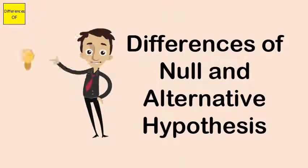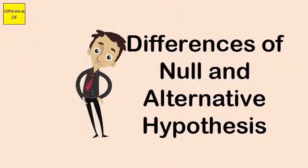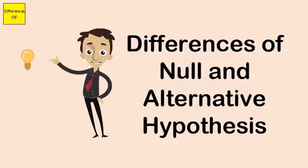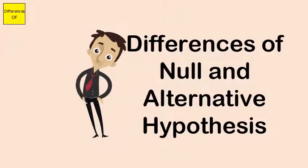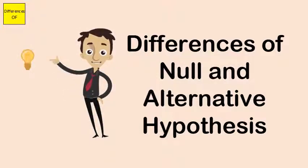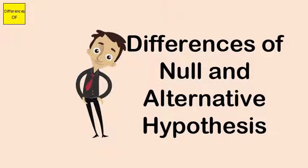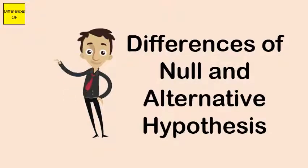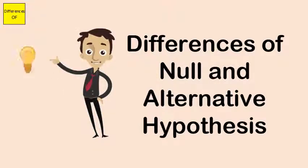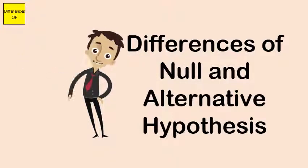Null hypothesis is tested first. Alternative hypothesis is used if the null hypothesis is not accepted or rejected. Null hypothesis is the prediction. Alternative hypothesis is all other outcomes aside from the null.